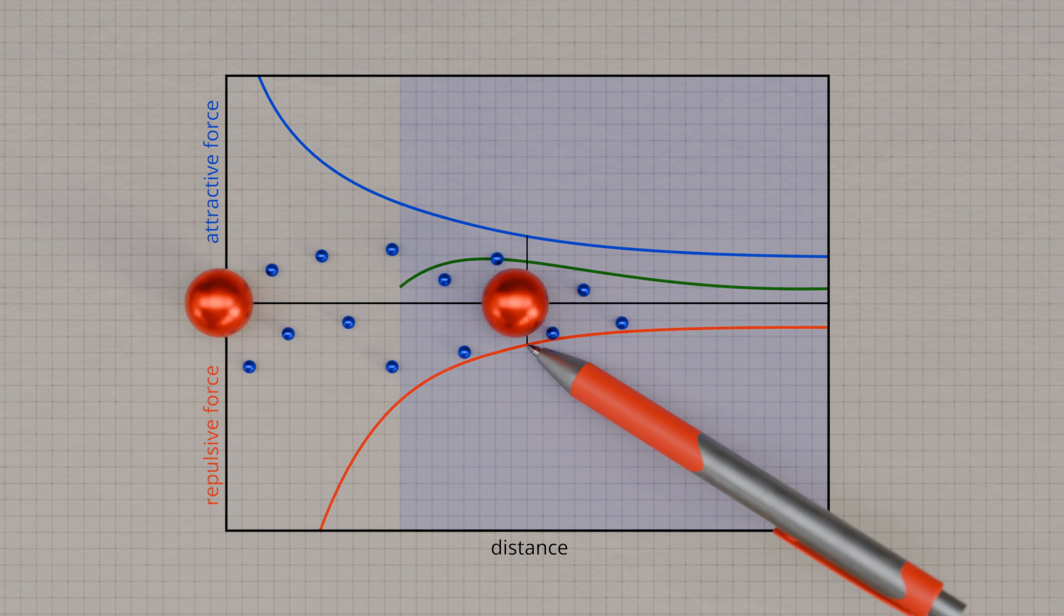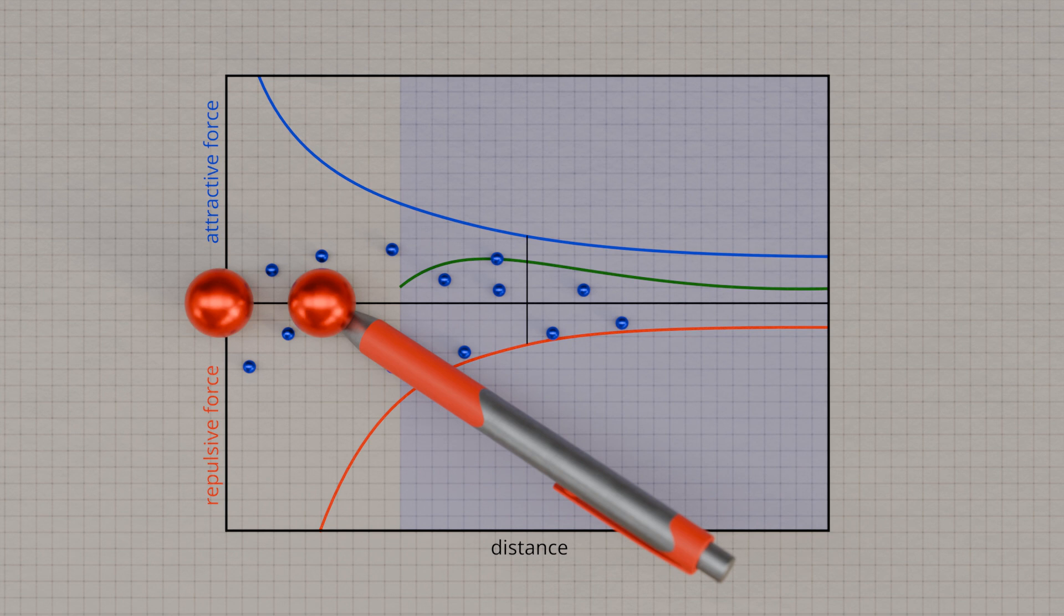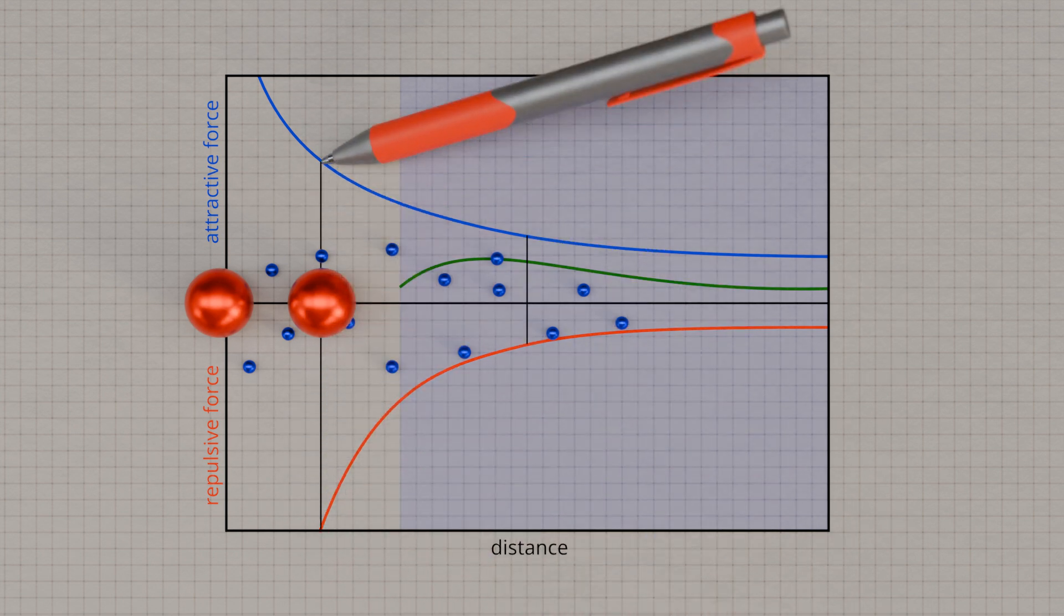As the distance between the two metal ions decreases, the repulsive force increases, becoming disproportionately larger than the attractive force. If the distance is too close, the repulsive force is greater than the attractive force of the electron gas. The green curve shows the resulting force on the atoms, which is repulsive in the red area.